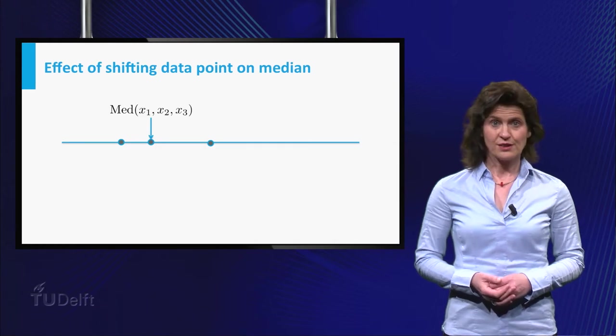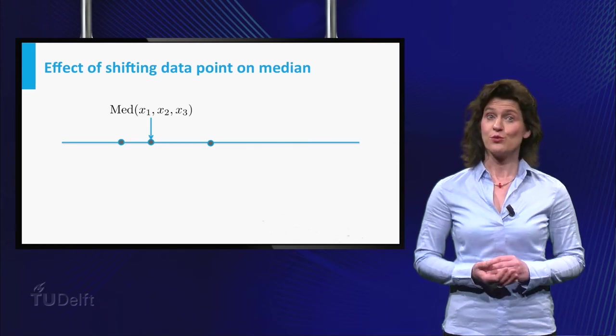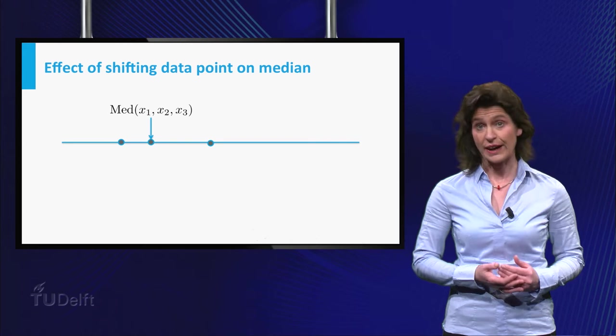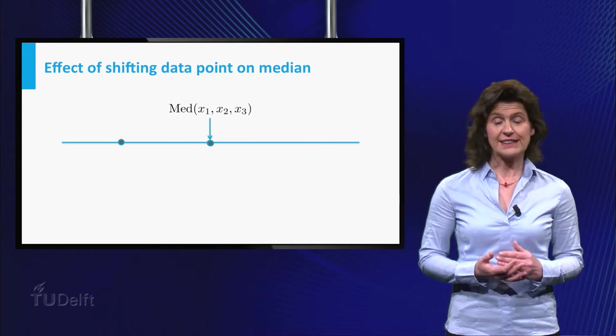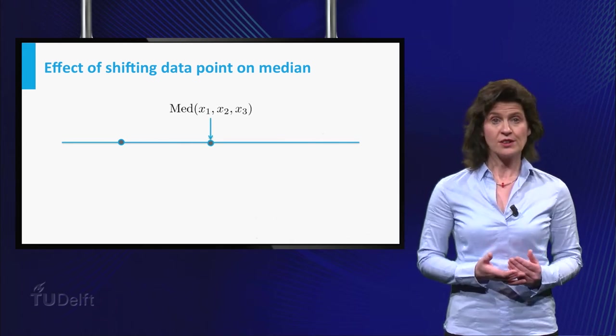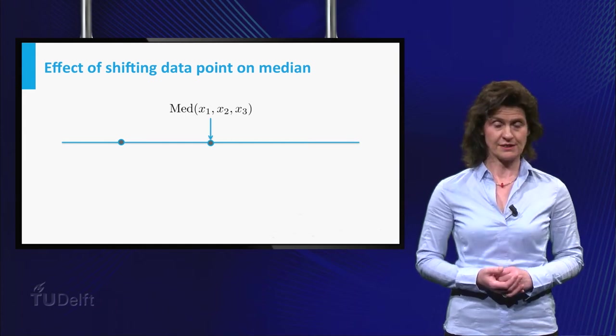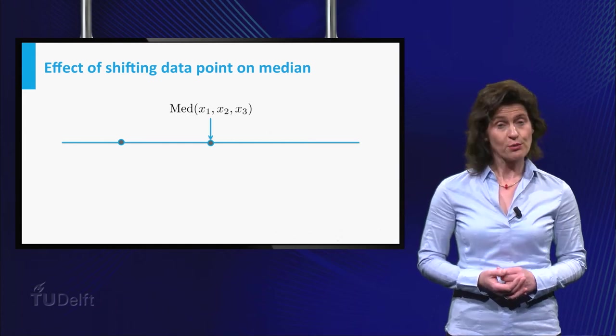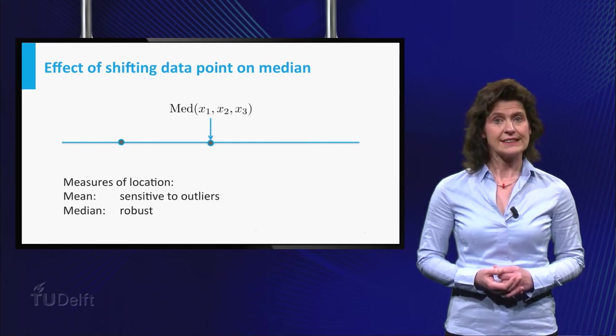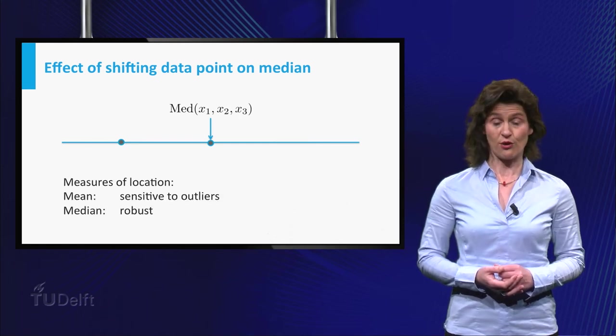Just for fun, look what happens to the median if one of the data points moves to the right. The median can change, but at some point, moving the point further to the right has no effect on the median. The terminology for this property of the median is that it is a robust measure of location.